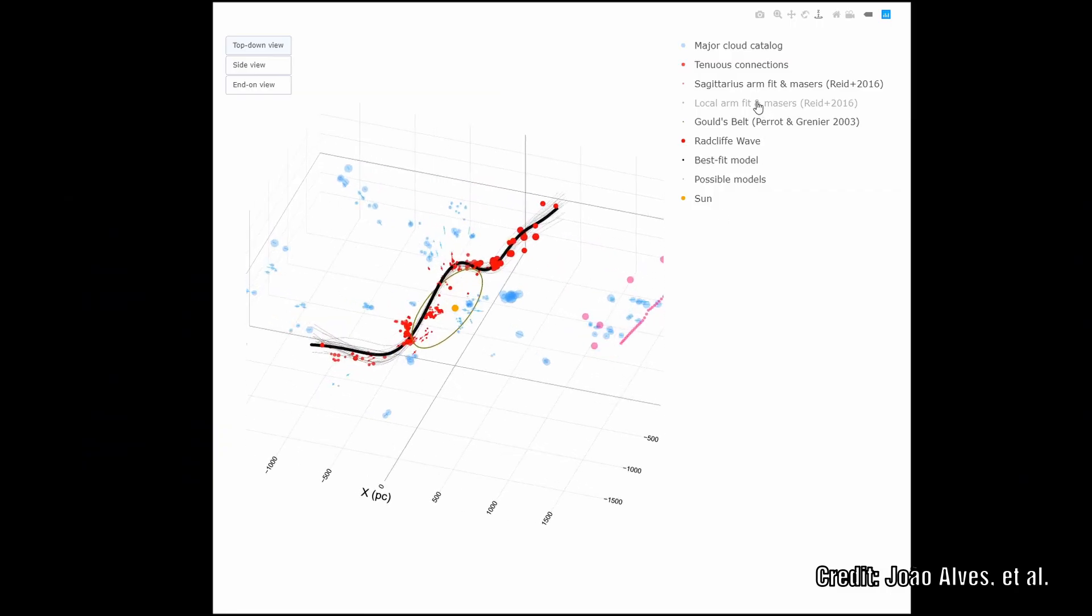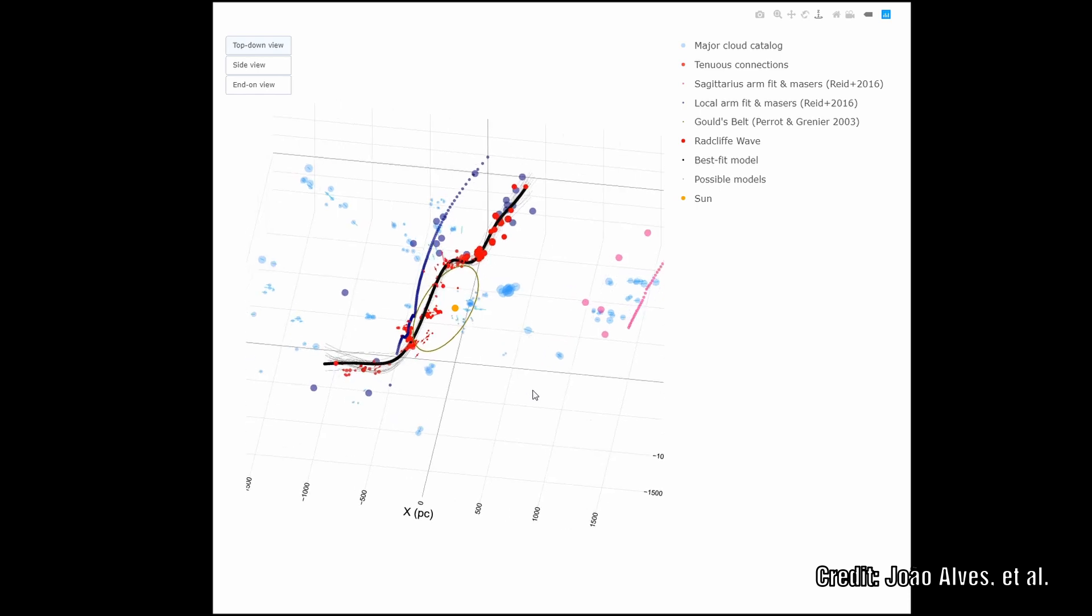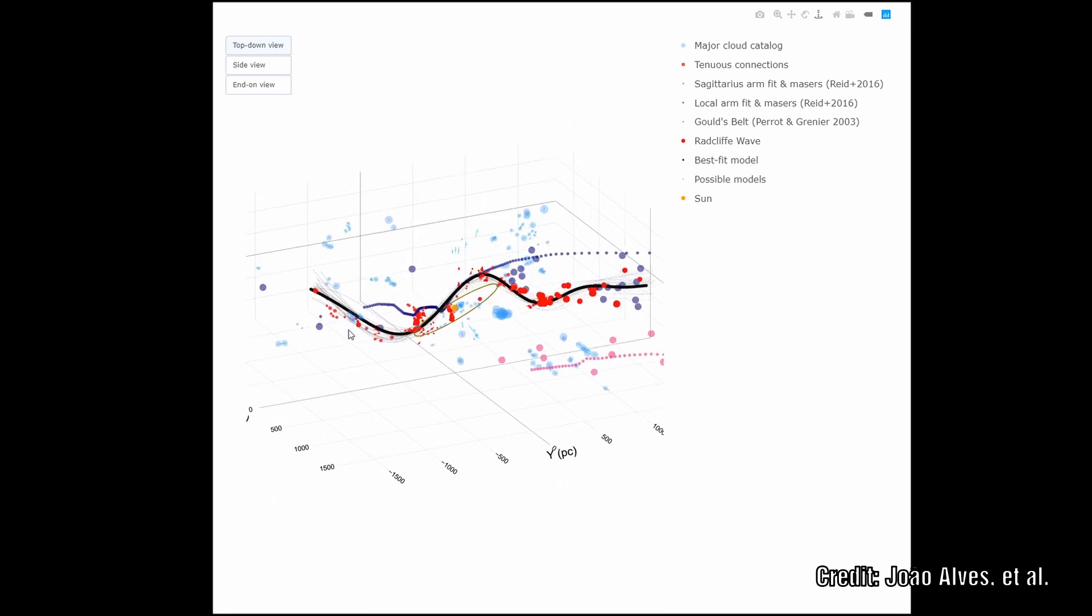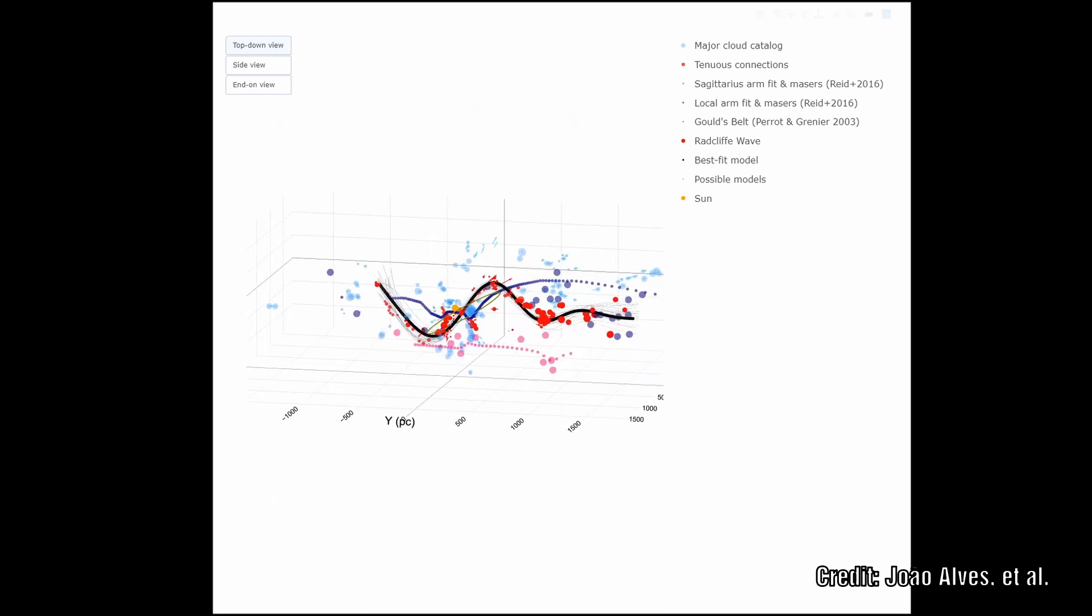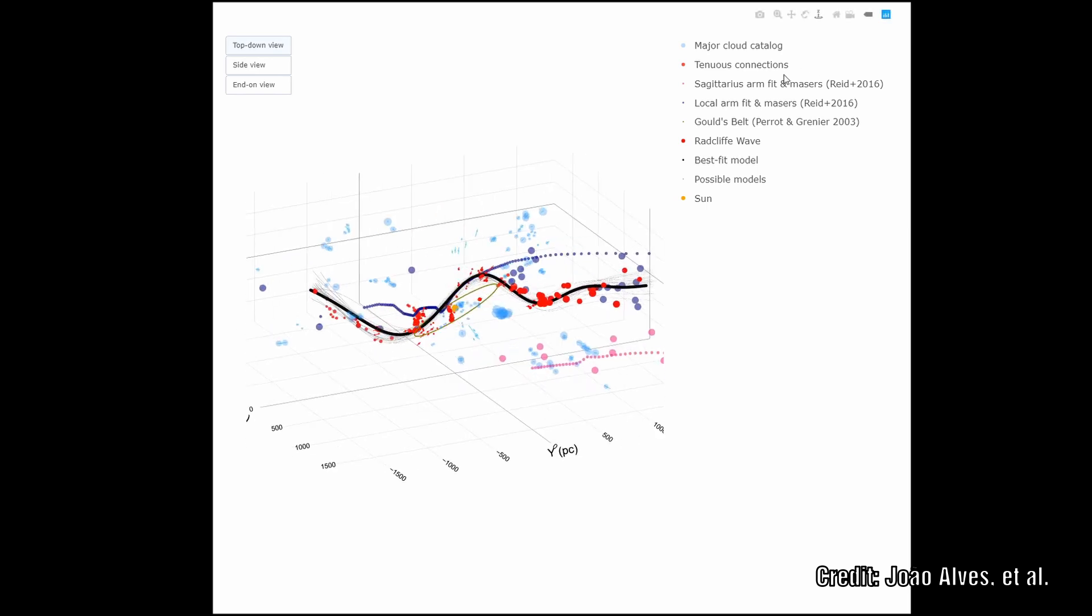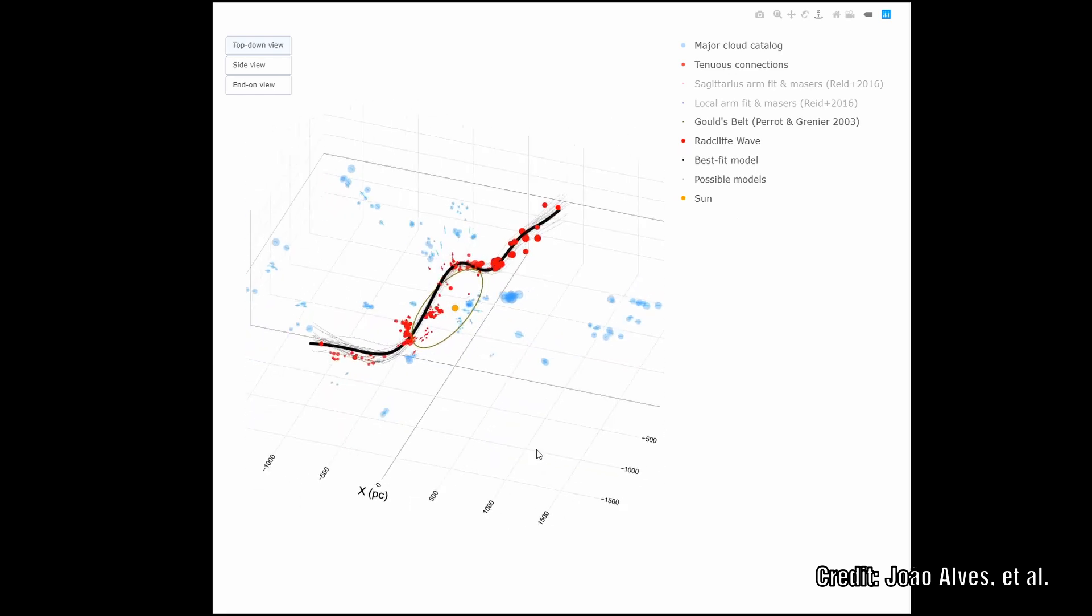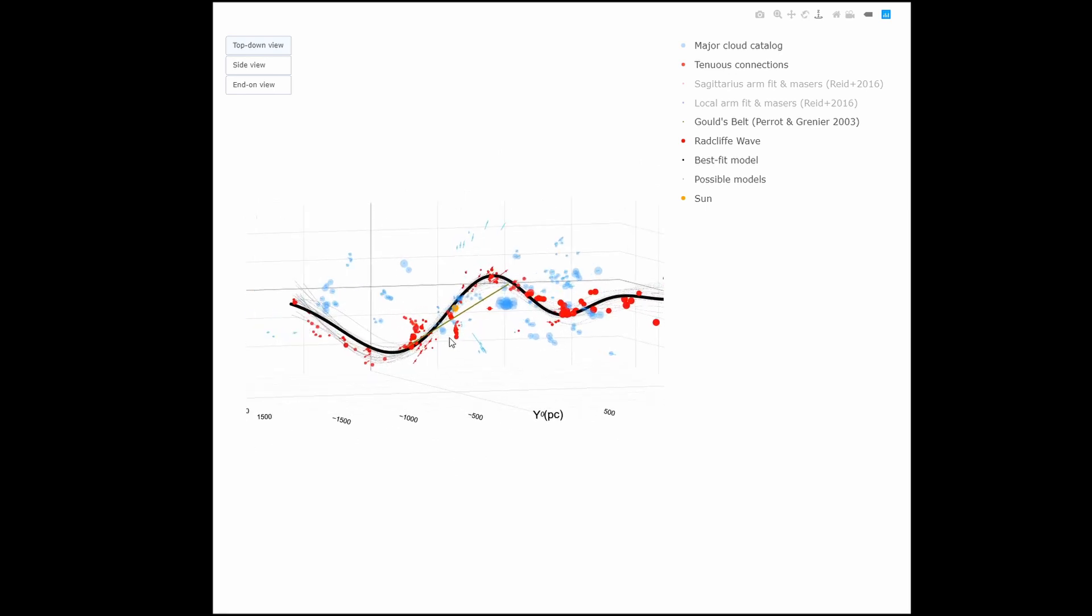One of the big questions that this throws up for scientists is how such a structure could form in the first place. They conceive wild ideas like a small galaxy might have clattered into that part of the Milky Way in the distant past, and of course, where would mainstream be without having to invoke the mysterious dark matter concepts?